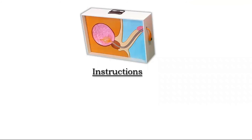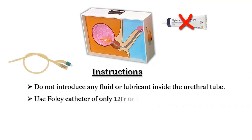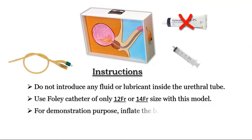Here are some basic instructions for users of this model. The urethra is made up of a transparent tube which allows smooth passage of the Foley catheter in dry state only, so please do not use any fluid or lubricant in this model. For demonstration, please use a catheter of 12 French or 14 French size only. Normally we inflate the balloon with distilled water, but for demonstration purposes please inflate it by air only.